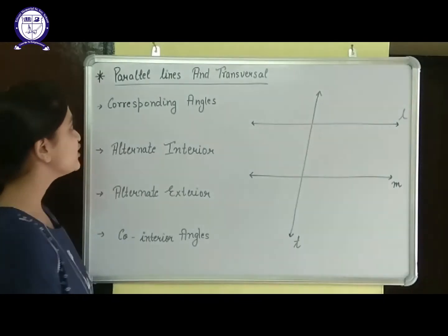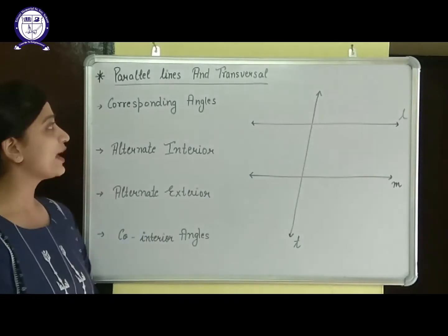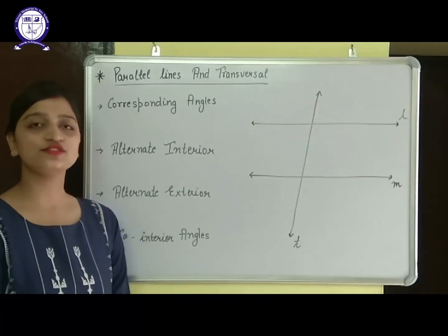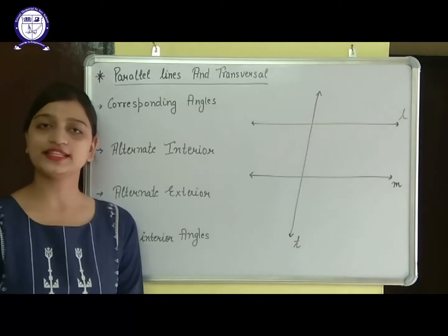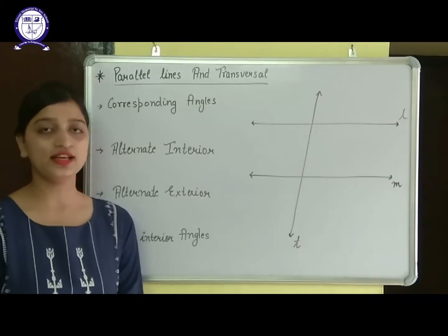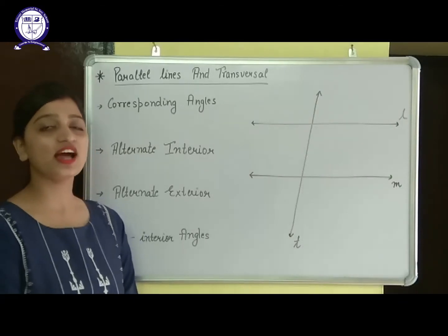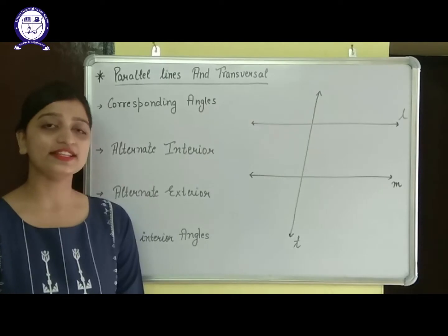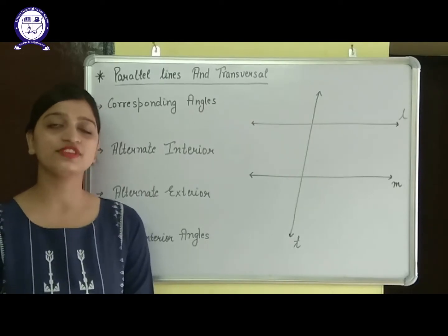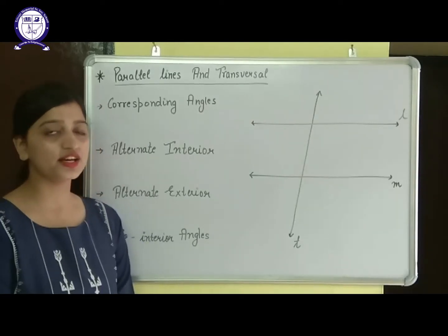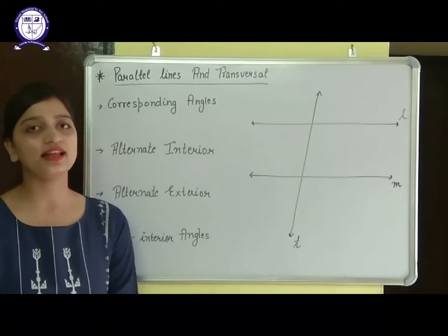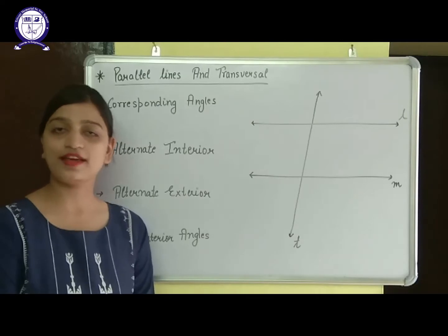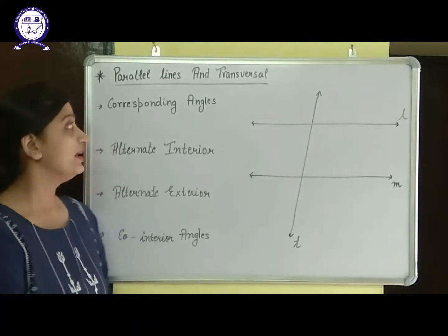First of all, what are parallel lines? Parallel lines are the lines which never intersect each other. That is, they are the opposite of intersecting lines. Intersecting lines cut each other, whereas parallel lines never intersect each other.